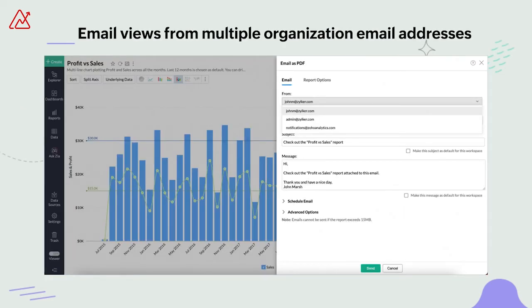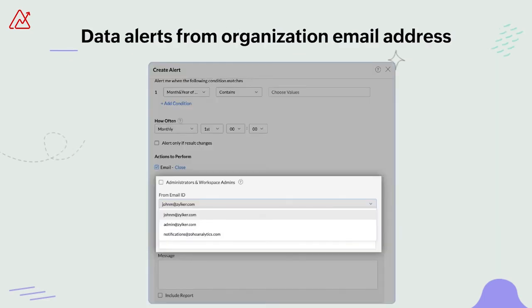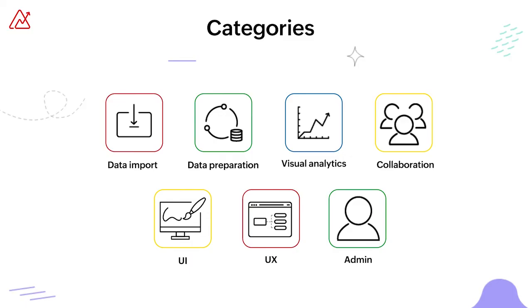Zoho Analytics now allows you to email views from your organization email addresses, in addition to the default notifications from the zohoanalytics.com email address. Another important update is that you can also send alert mails to your users from an organization email address, adding a touch of personalization. That's about it for the main updates, but we're not quite done yet — we do have some important information to share before we move on to the summary.